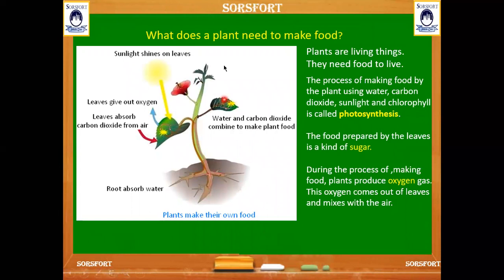To prepare its own food, a leaf needs: water taken from the roots from the soil, carbon dioxide taken from the air, sunlight from the sun, and the chlorophyll present in the leaves. Using all of these, the leaf prepares food for the plant — this process is called photosynthesis. The food prepared by the leaves is a kind of sugar.